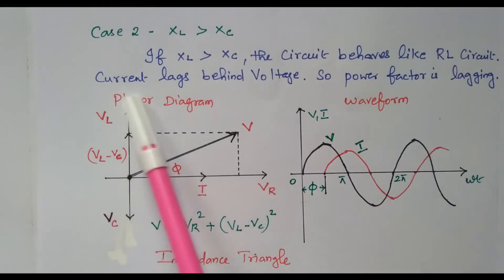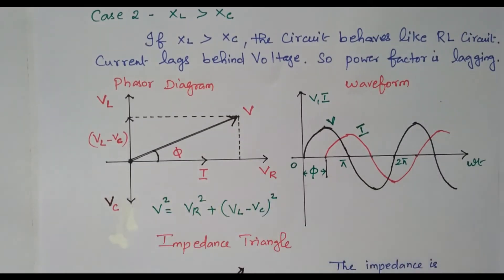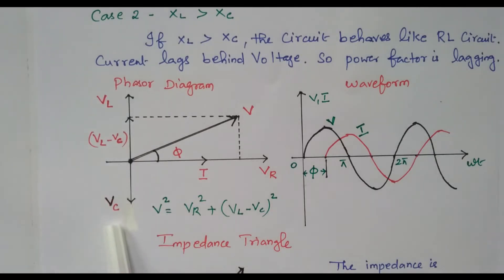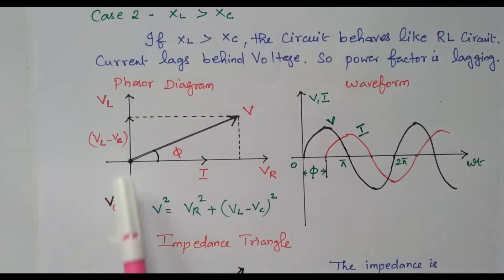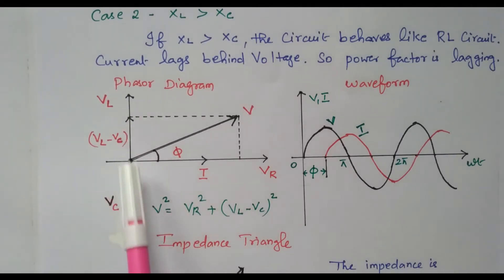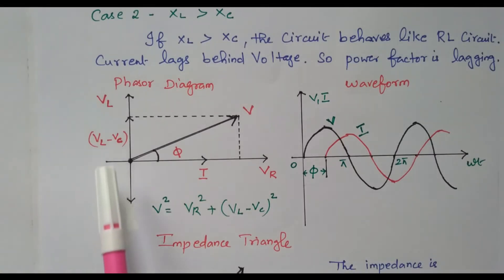Based on that, the phasor diagram is available. The current is taken as the reference vector. The voltage across the resistor Vr is in phase with the current. The voltage across the inductor is leading — current is lagging means voltage is leading. The voltage across the capacitor: current is leading means voltage is lagging. The magnitude of Vc is lesser and Vl is greater, so the difference Vl minus Vc is available. The vector sum of Vr and Vl minus Vc is the total voltage V.